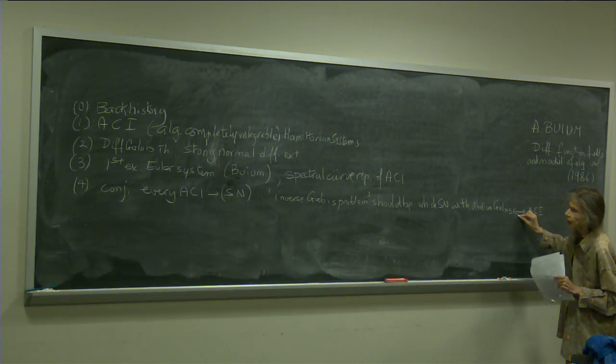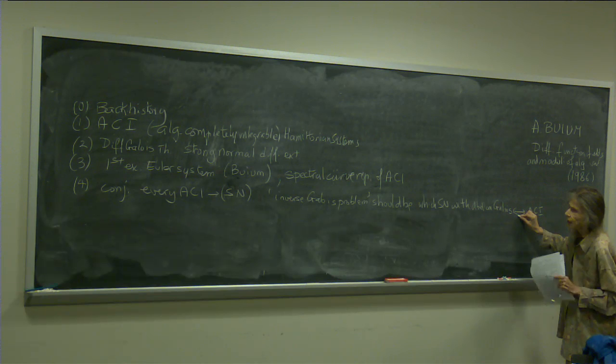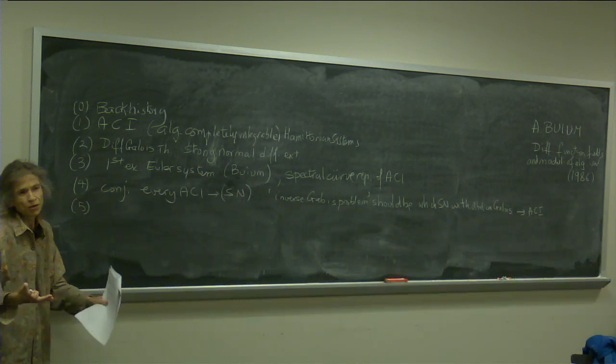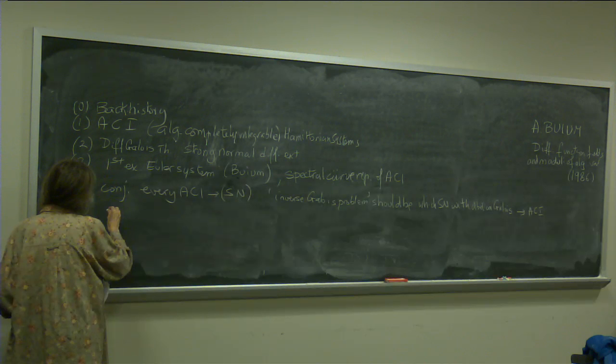And in his book this will be abbreviated as strongly normal. I wanted to pose it as a direct Galois problem and an inverse Galois problem. I was thinking of being more naive about the inverse Galois problem, but Alex says it should be phrased like this: an inverse Galois problem should be an inverse Galois problem. We haven't figured it out yet. The question should be: which strongly normal extensions with an abelian Galois group arise from an ACI?